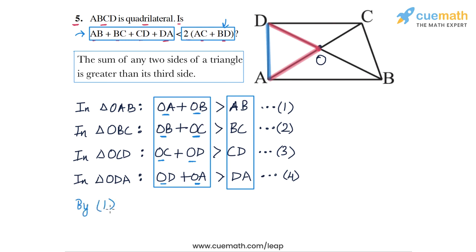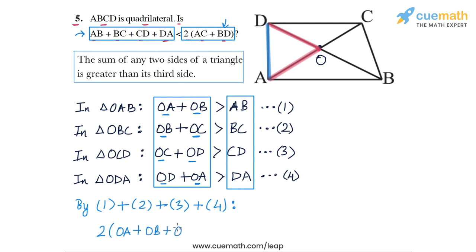So if we add inequalities 1 plus 2 plus 3 plus 4, on the left side we obtain twice of OA, twice of OB, twice of OC, and twice of OD — so we can write twice of OA plus OB plus OC plus OD. And on the right side we obtain the sum of the four sides of the quadrilateral: AB plus BC plus CD plus DA.